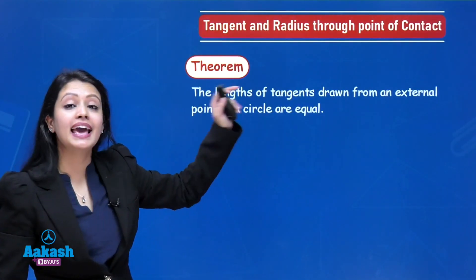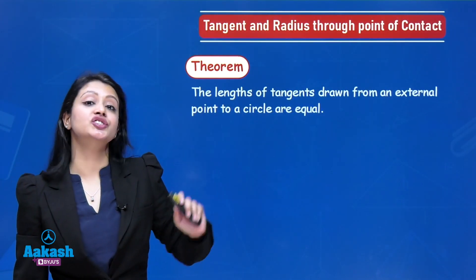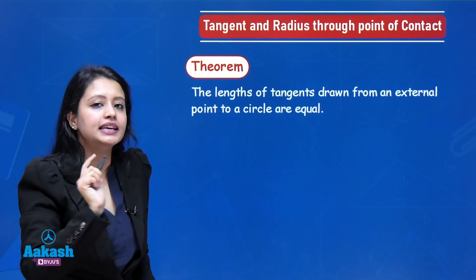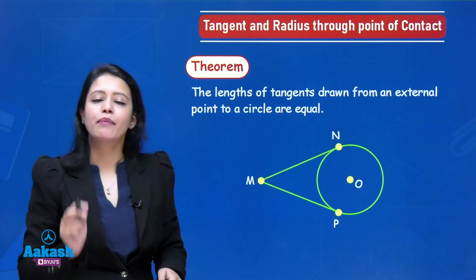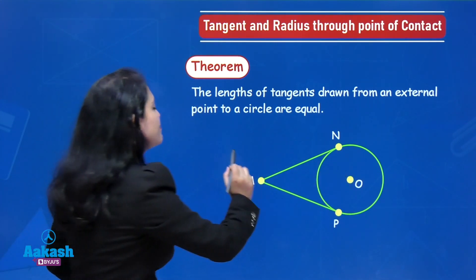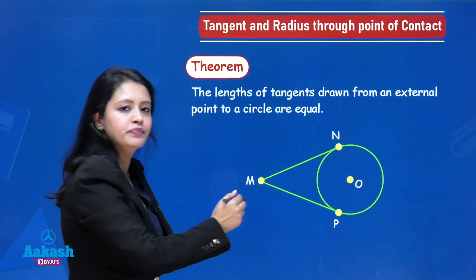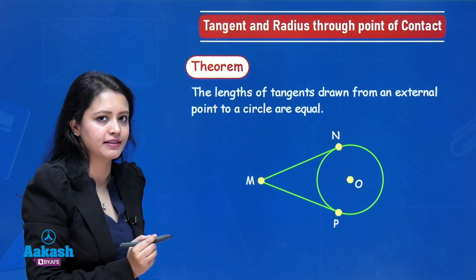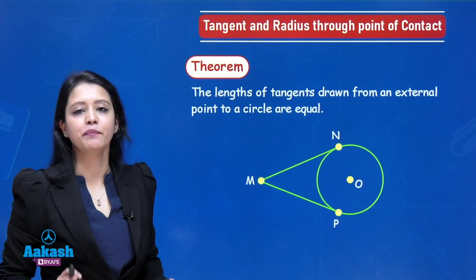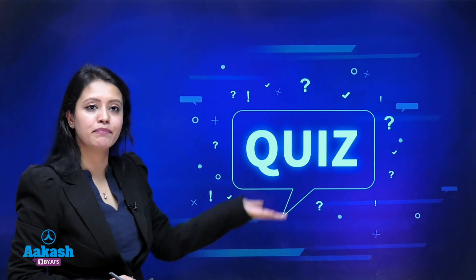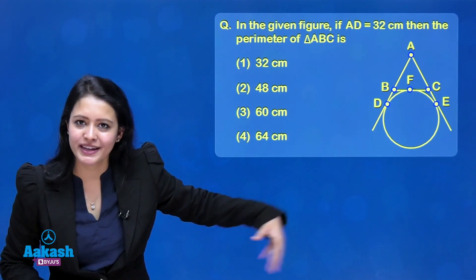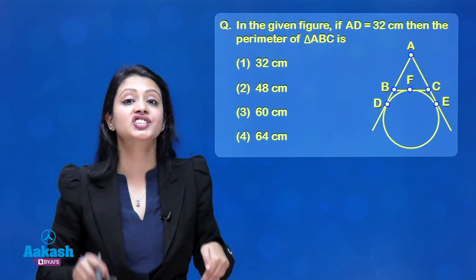Let us now see the second very important theorem on tangents of a circle: the lengths of tangents drawn from an external point to a circle are equal. If external point M has two tangents MN and MP drawn to a circle with center O, then MN equals MP. Let us see a quiz based on this theorem. This question has also been asked in board exams.